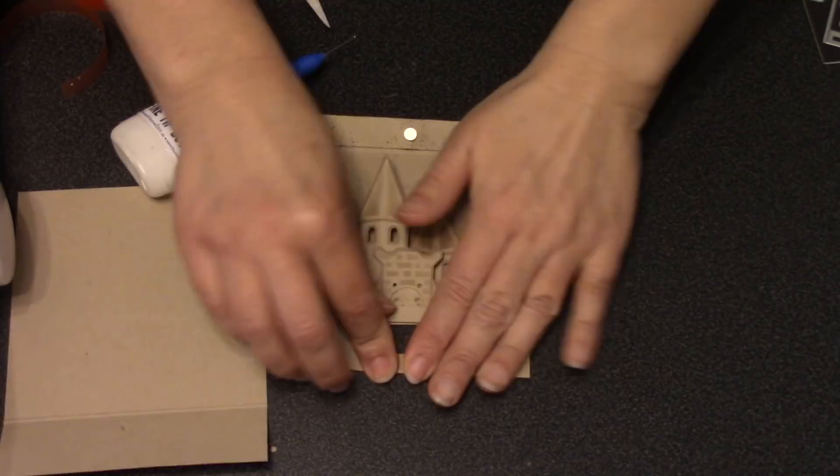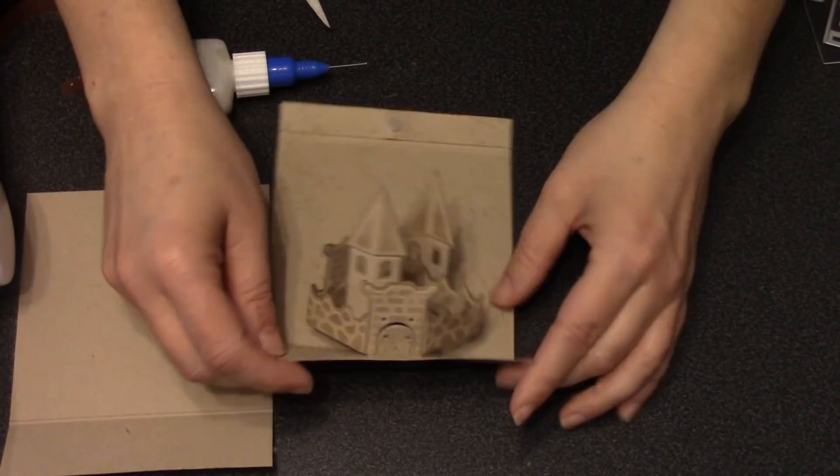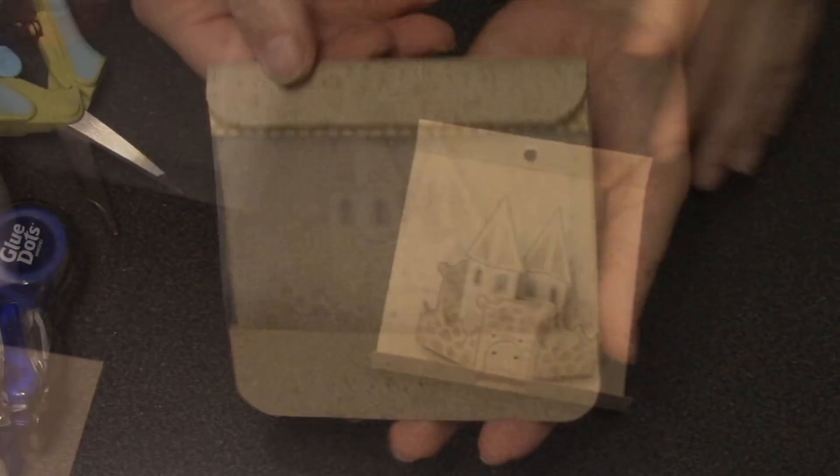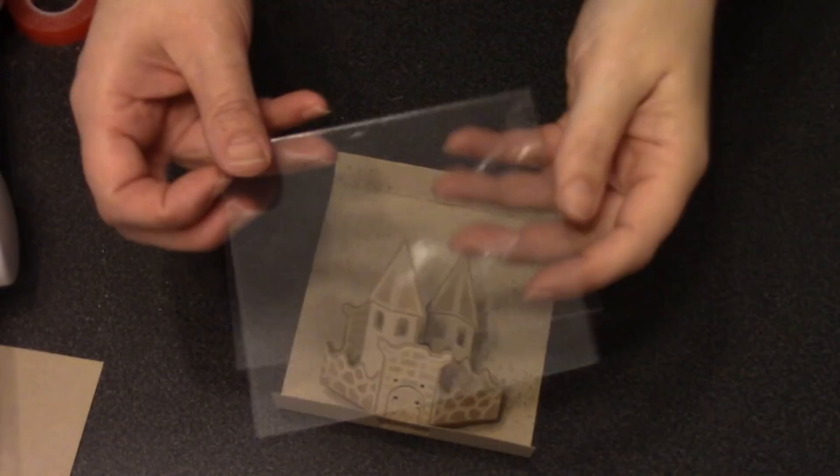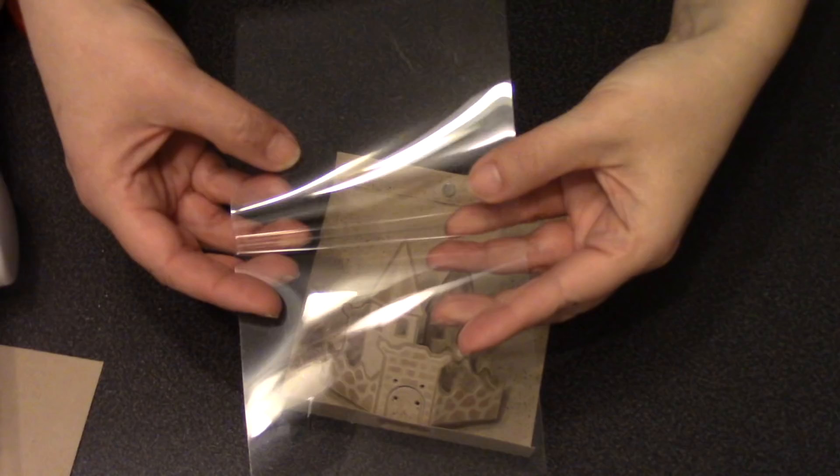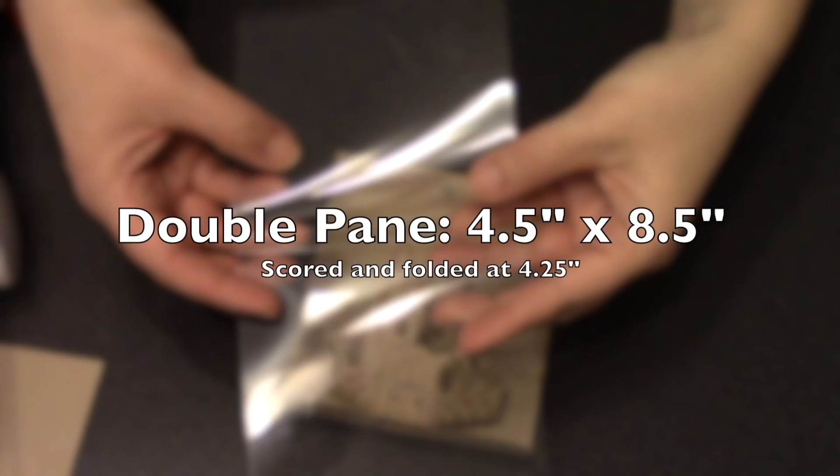My concept for this card is that in the closed position, you can see the sandcastle, but it's partially obscured because the window itself has real sand in it. If you prefer to just make a clear window, you need a single piece of transparency 4.5 inches wide by 4.25 inches tall. But if you want to be adventurous, try a double pane window so you can add sand, beads, or sequins between those panes. You'd need 4.5 inches by 8.5 inches on your transparency, scored and folded at 4.25 inches.